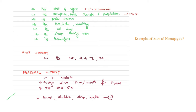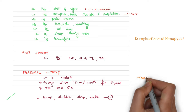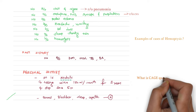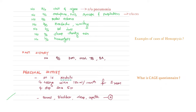Personal history: patient is alcoholic, taking wine 180 ml per month for three years, and stopped since five years. Bowel, bladder, sleep, and appetite are normal. When you mention the patient is alcoholic, the examiner will definitely ask about the CAGE questionnaire.